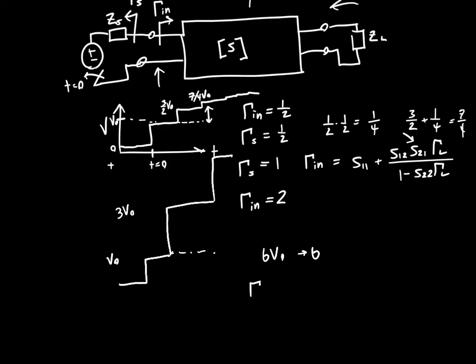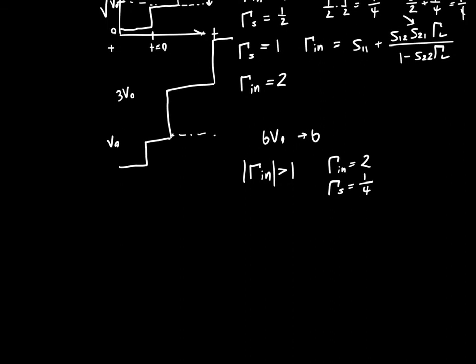Any system that has magnitude of gamma_n greater than one is a potentially unstable system. It isn't necessarily unstable — it depends on the value of gamma_s, because if gamma_n equals two but gamma_s equals one-fourth, then gamma_s can attenuate the signal faster than gamma_n grows it, so we won't necessarily have instability. This same analysis can be repeated for the output port with gamma_out: for |gamma_out| greater than one, assuming a passive load, the system is potentially unstable.